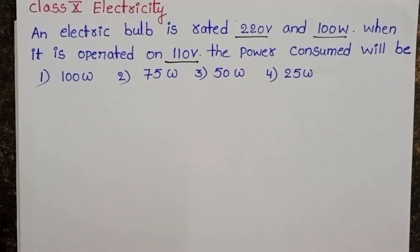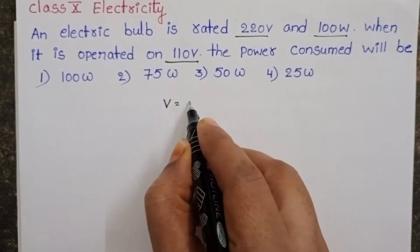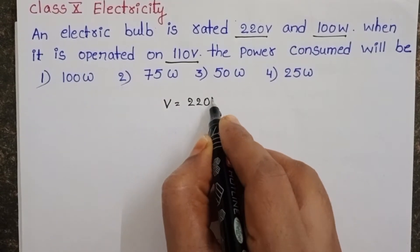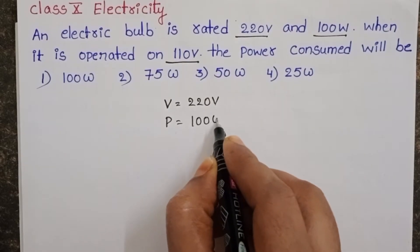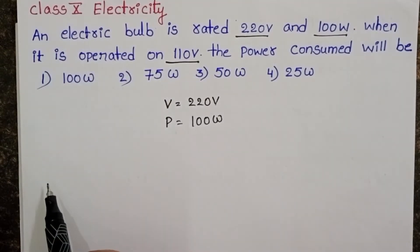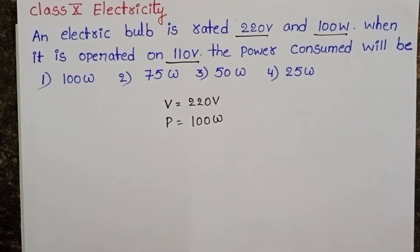In this question, we know the rating of the bulb. Given potential of the bulb is 220 volt and power is 100 watts. But we don't know the resistance of the electric bulb. By using this information, first to find out the resistance of the electric bulb.